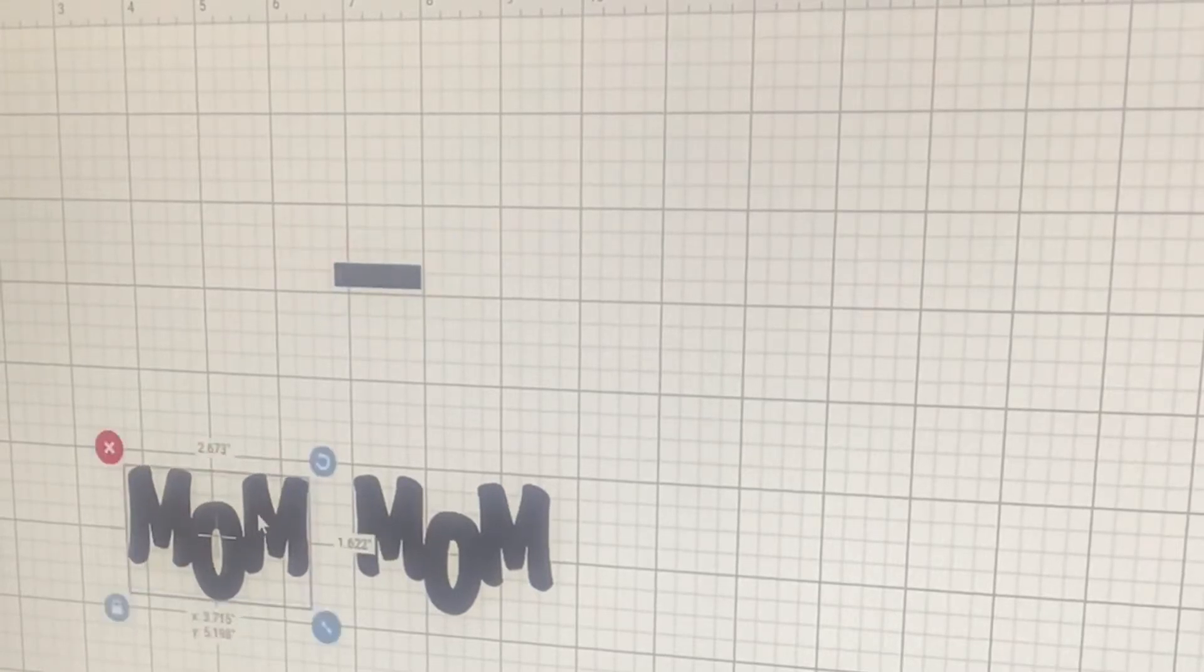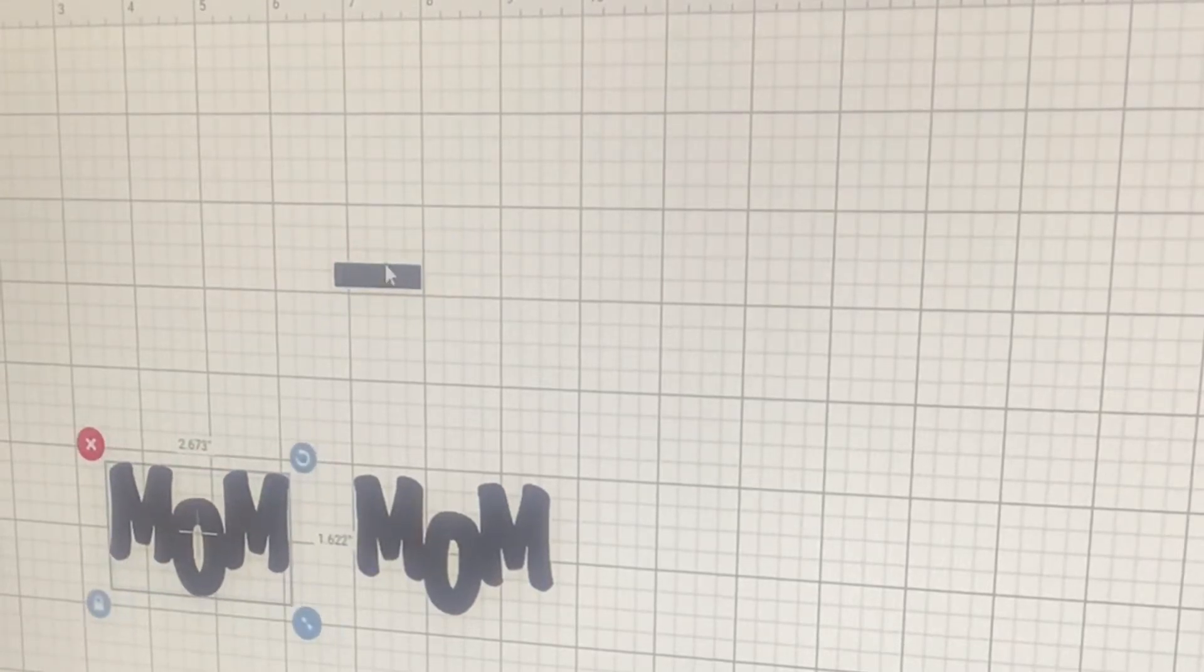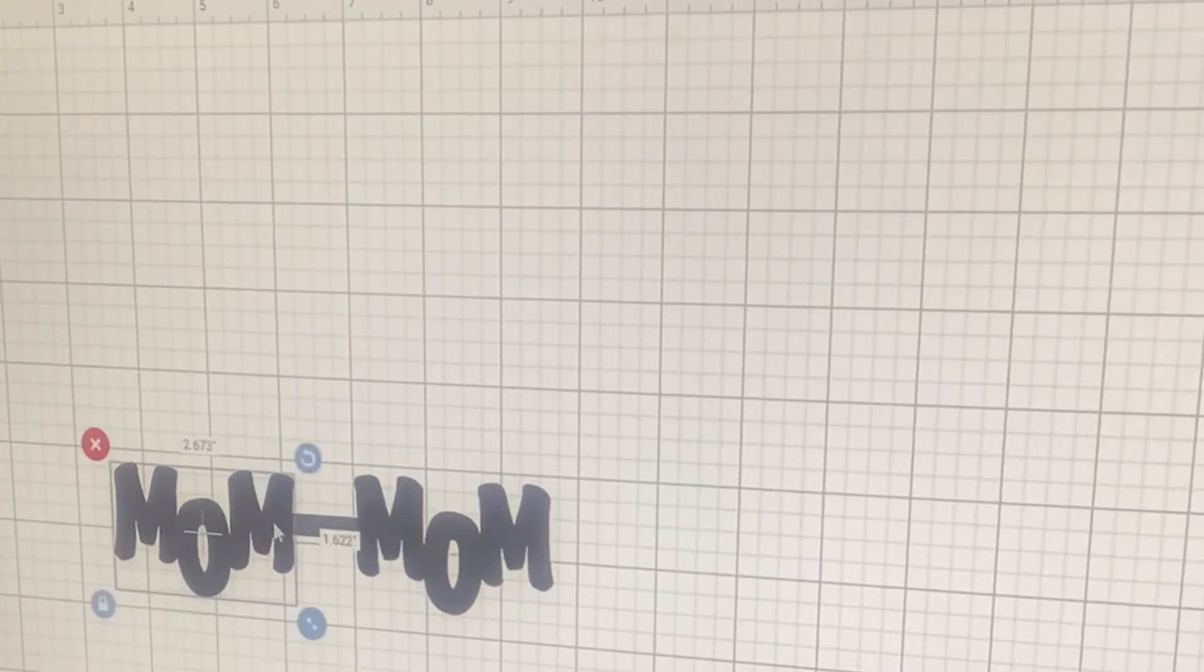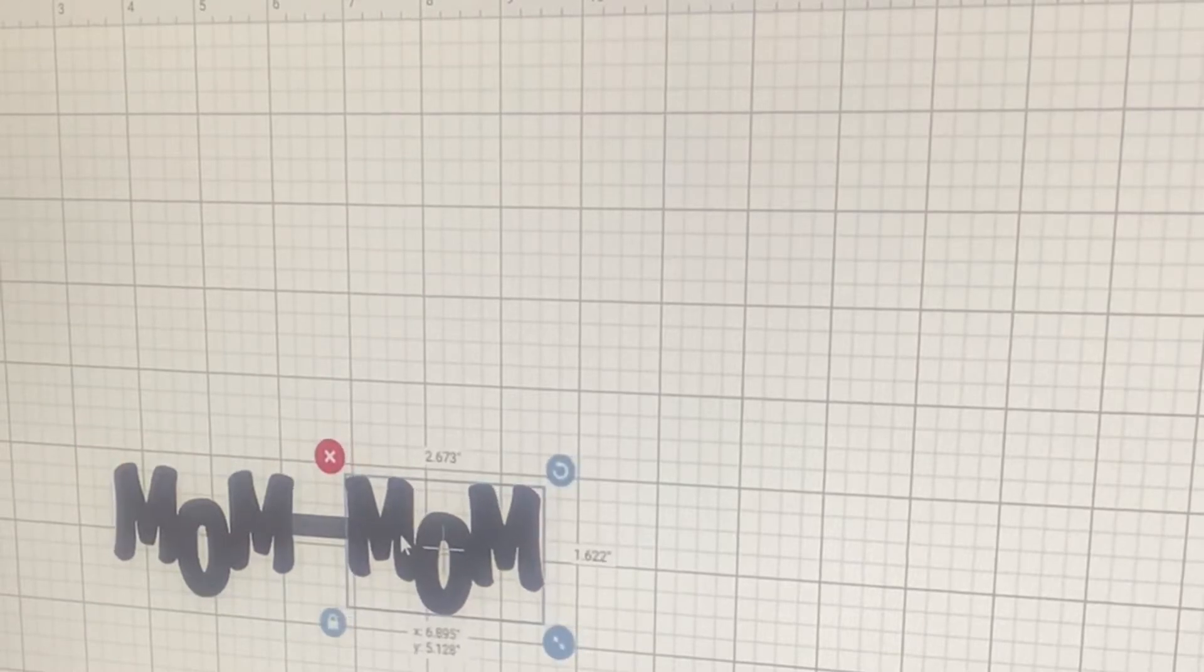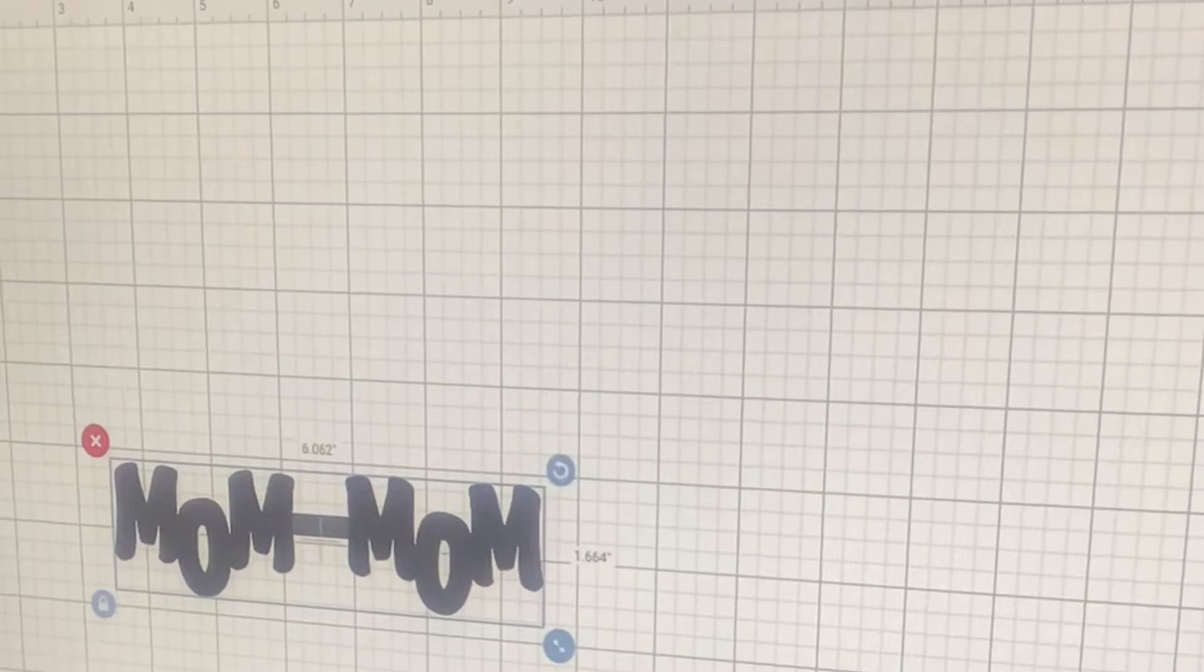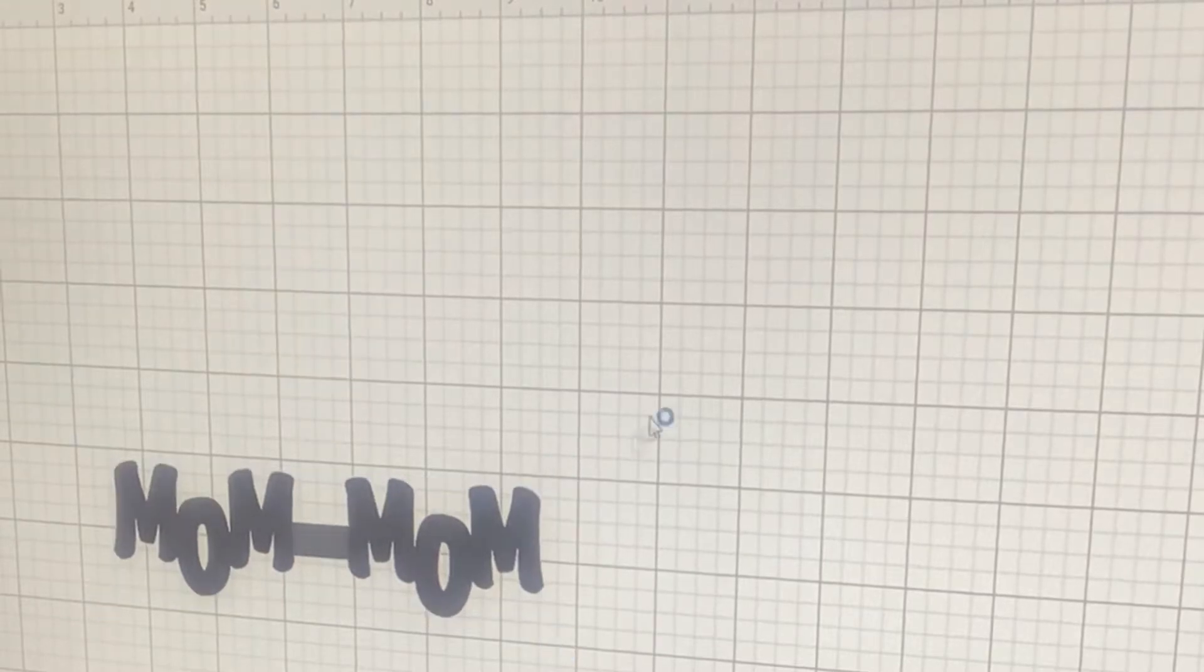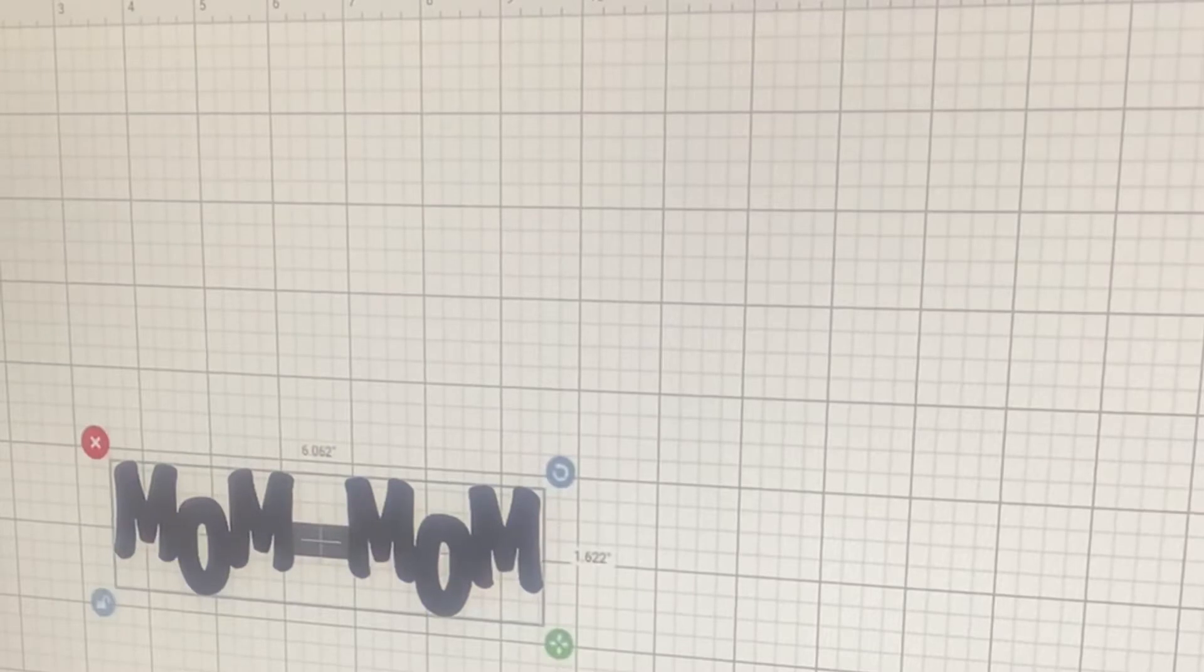Where it says flip, I'm going to flip it horizontal. I'm going to readjust this a little bit, spread these out just a tad, and then I'm going to slide this right in between them. Once I have that, I'm going to highlight it all and I'm going to go back up to align. On the align I'm going to hit center vertically. Now that you have that all centered up and lined up, you're going to highlight it and weld it all together.